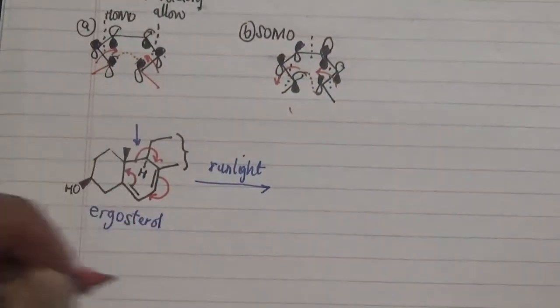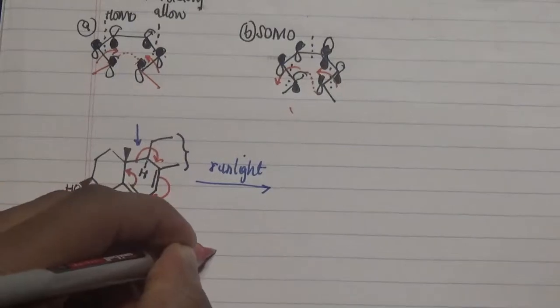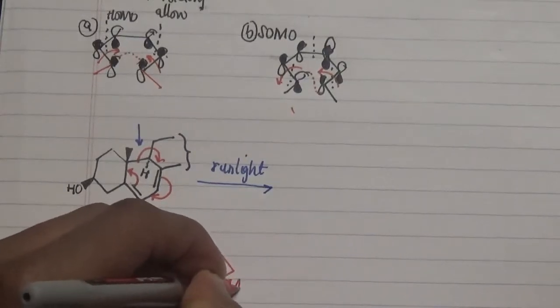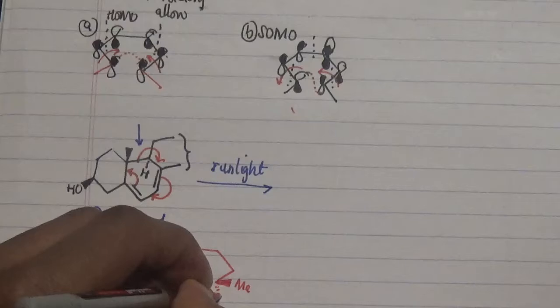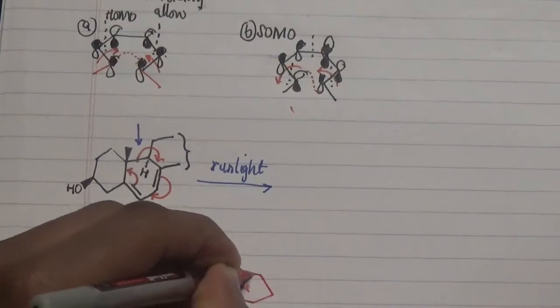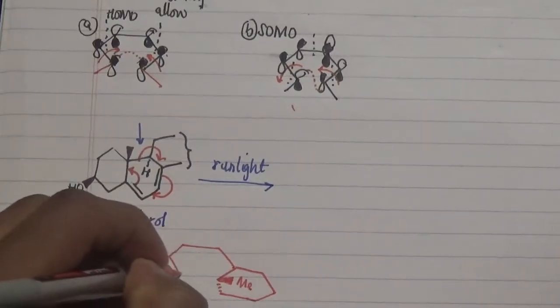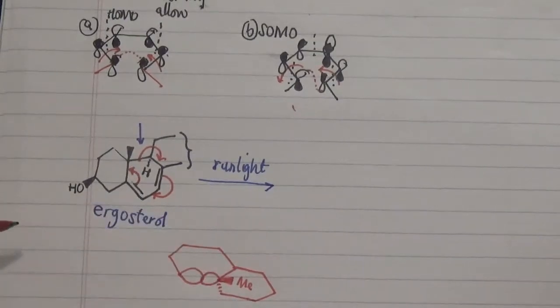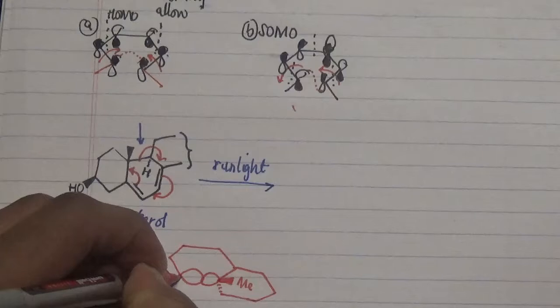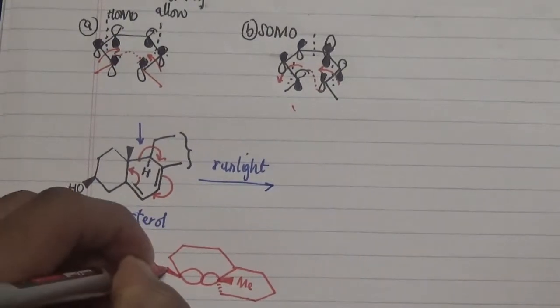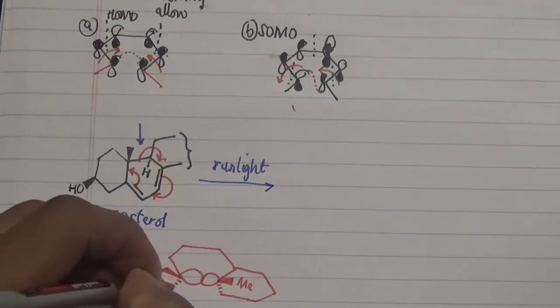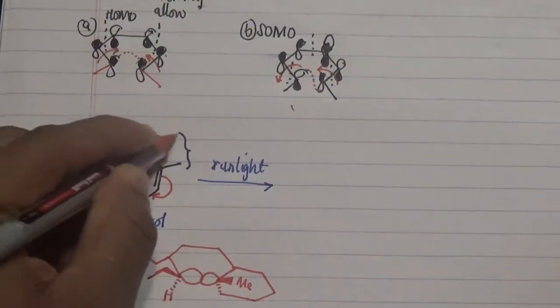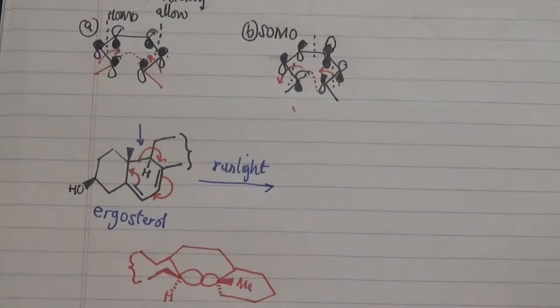By changing the view we see the methyl group pointing up and the other ring pointing down, which joins with this main ring. We have our sigma bond from this carbon overlapping with the sigma bond of this other carbon. We have this one pointing up and the hydrogen pointing down, and we have this other part of our segment here.